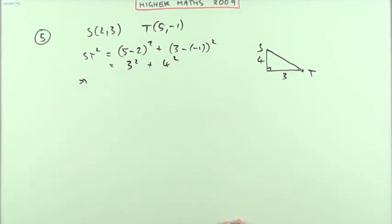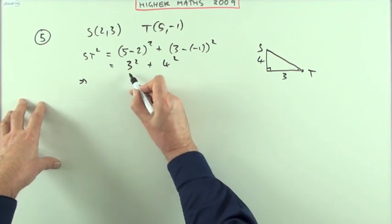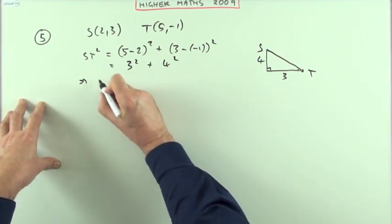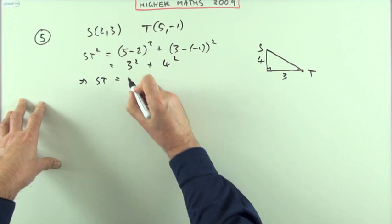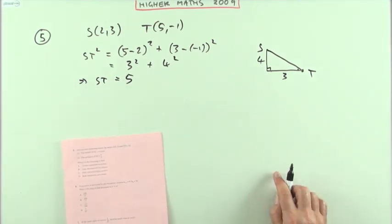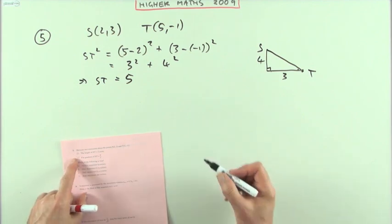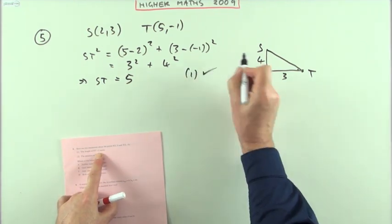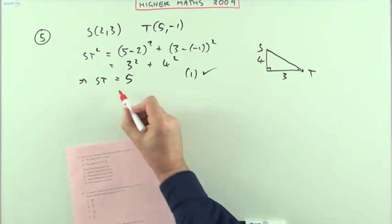I've got 3 squared plus 4 squared. Usually as soon as you see 3 squared and 4 squared, I don't need to finish it off. 9 plus 16 is 25, square root of 25 is 5. So that means ST equals 5. So that first statement—if ST is 5, then statement 1, which says ST is 5, is true. I'll put a tick on that part.